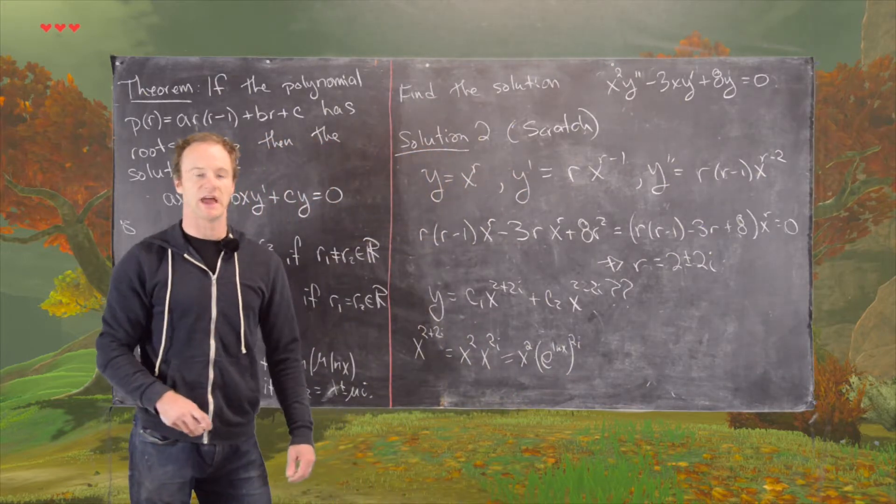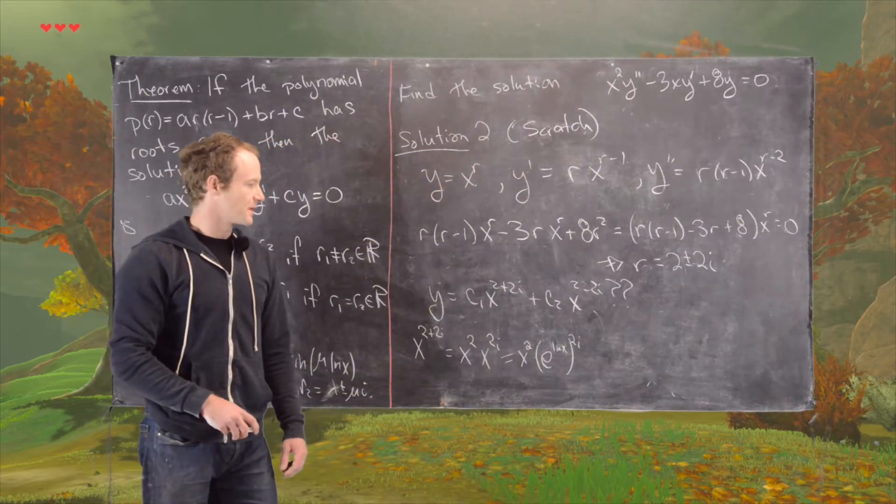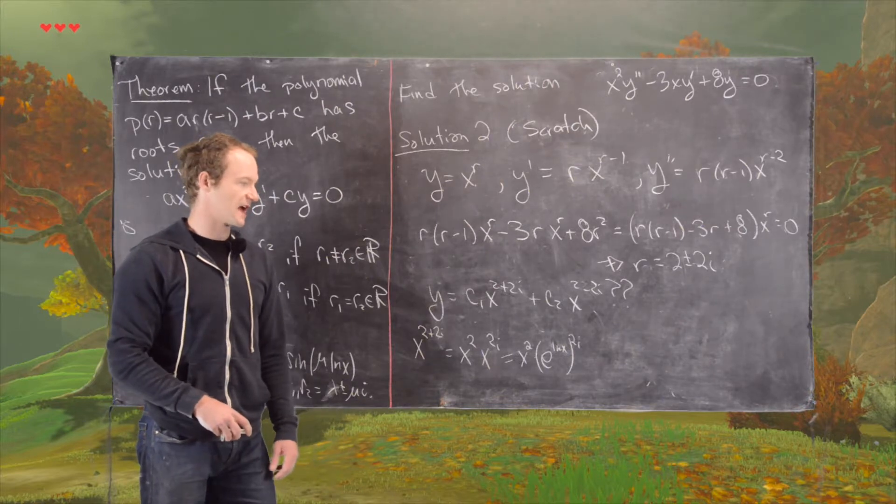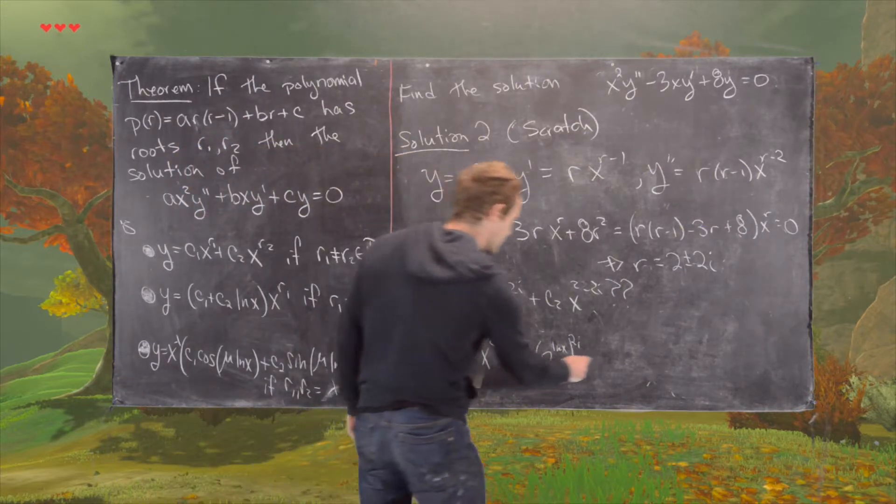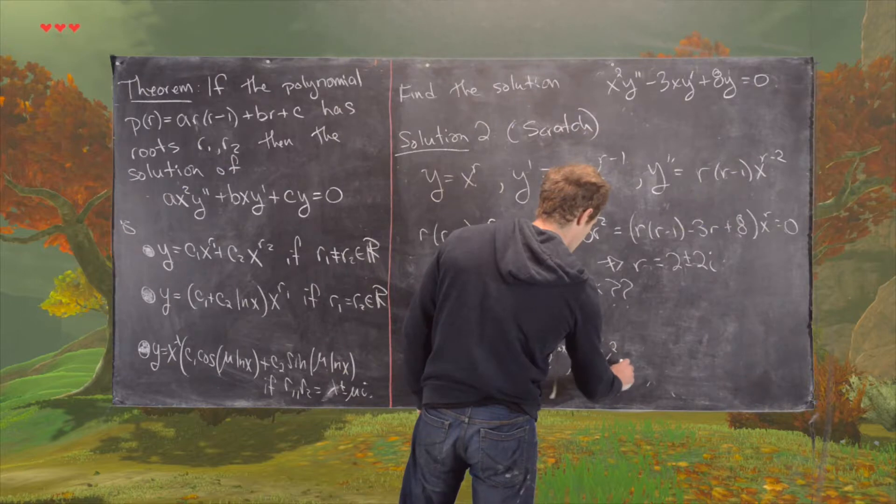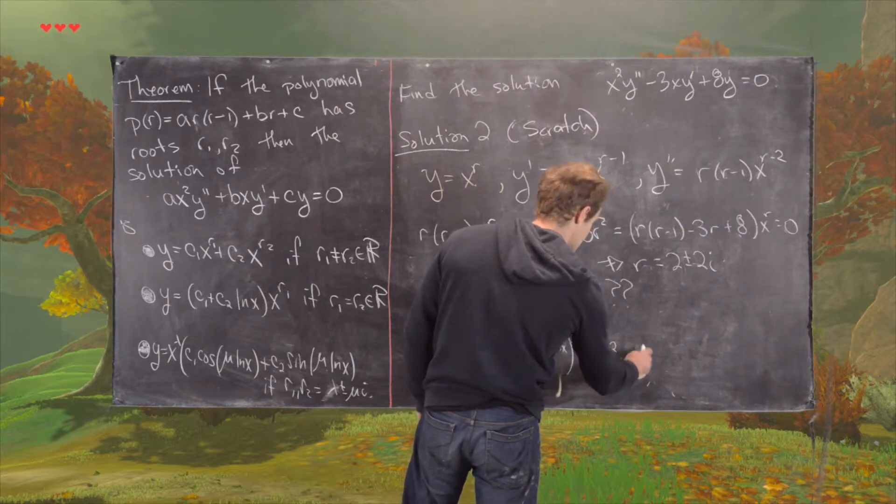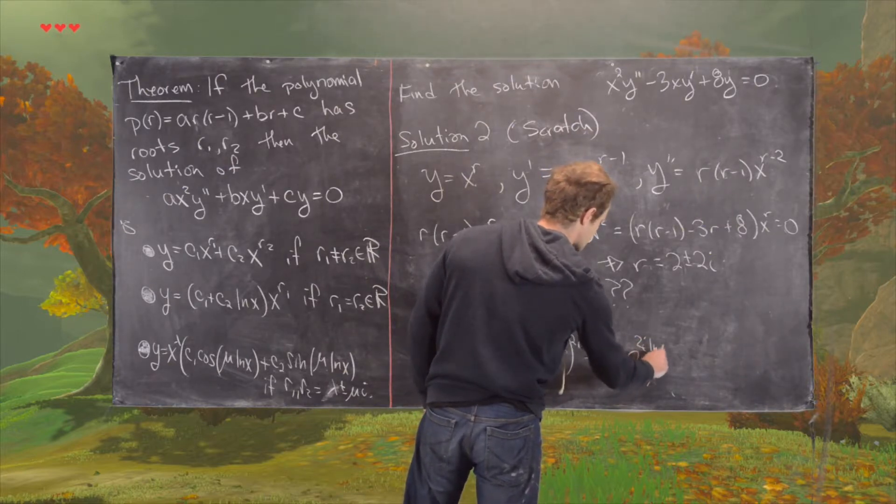Using exponent rules and the inverse relationship of the exponential and the natural log, that's going to give us x squared times e to the 2i times natural log of x.